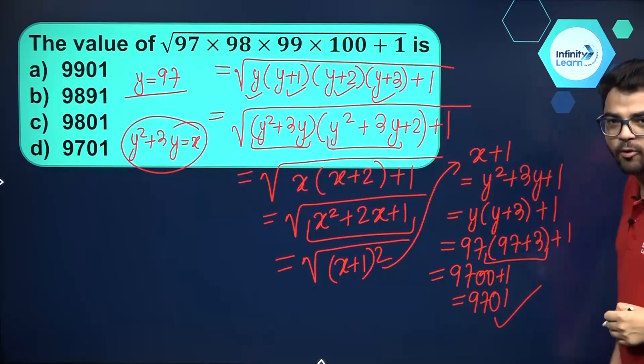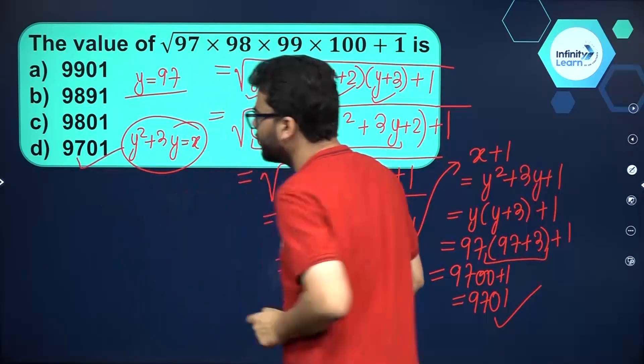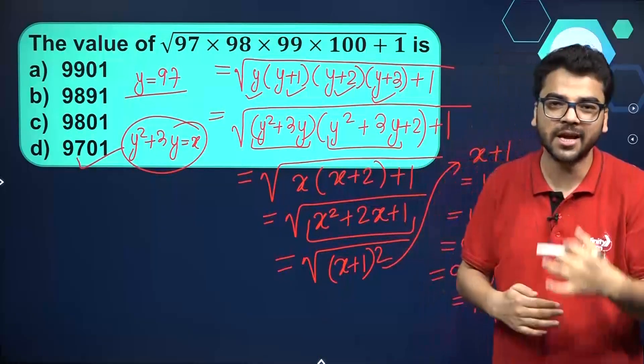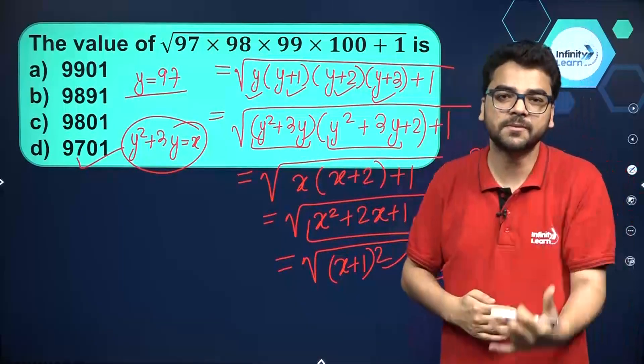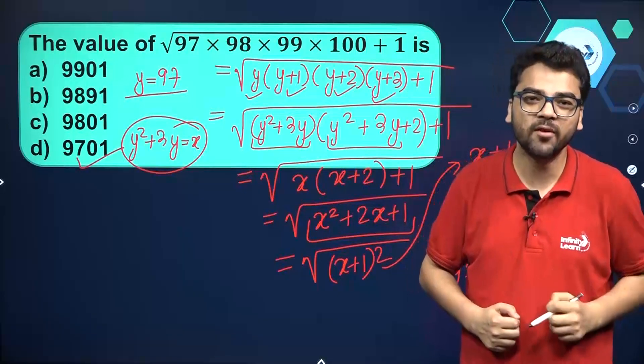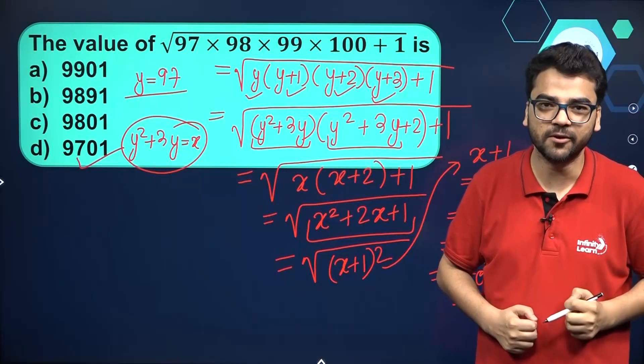So the answer is 9701. This type of question can be solved easily if we use the right substitutions. I hope this is clear to every student watching this video.